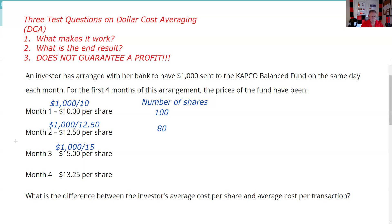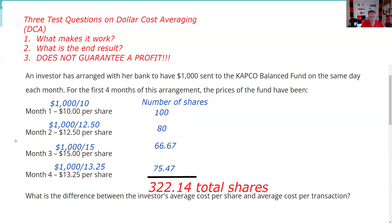In month two we get 80 shares. In month three we invest a thousand dollars at $15, cutting back further — we get 66.67 shares. In month four, at $13.25, we buy more shares because the price is lower, getting 75.47 shares. We now have a total of 322.14 shares. In mutual funds, you can buy full and fractional shares, so fractional share purchases are not a problem.